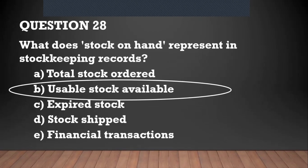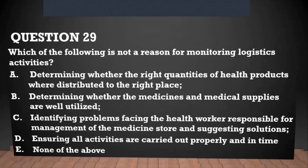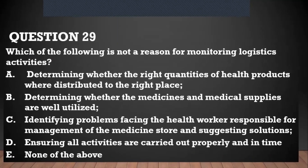Stock on hand represents the amount of usable stock that is available. Question number twenty-nine: which of the following is not a reason for monitoring logistics activity? Determining whether the right quantities of health commodities are distributed to the right place should be one of the reasons, and determining whether medicines or medical supplies are well utilized — you should be able to monitor that.